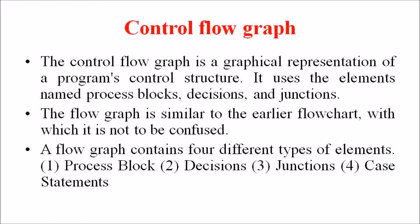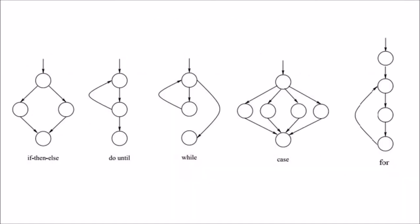The flow graph elements are firstly the process block, second one is the decision field, third one is the junctions, and fourth one are the case statements.